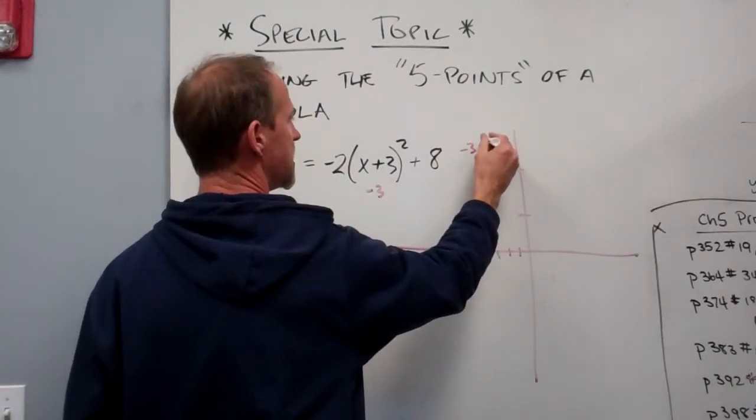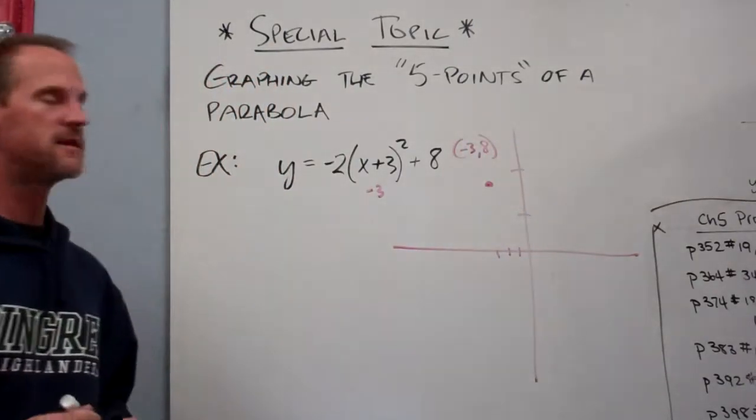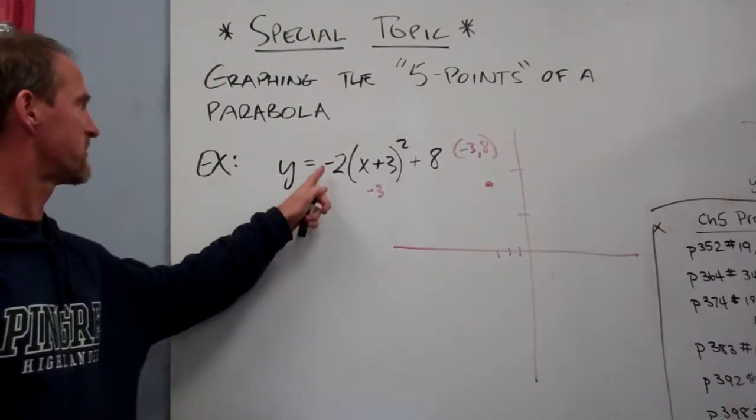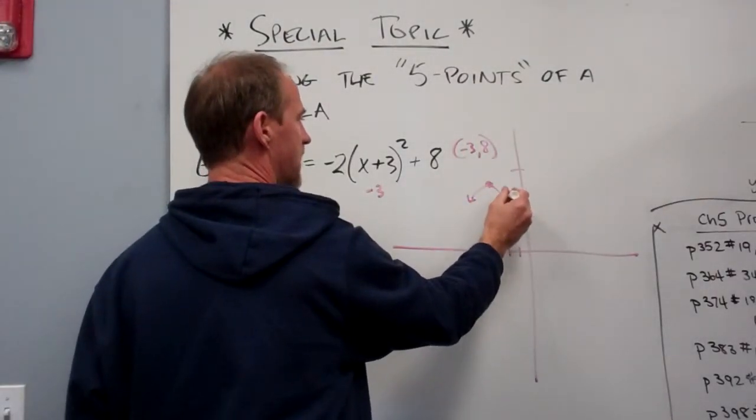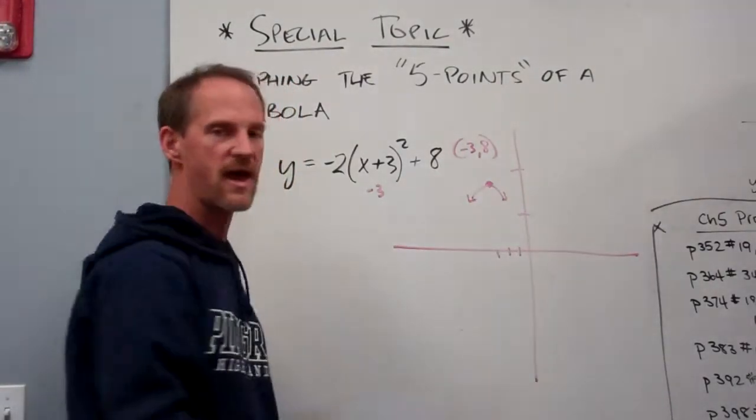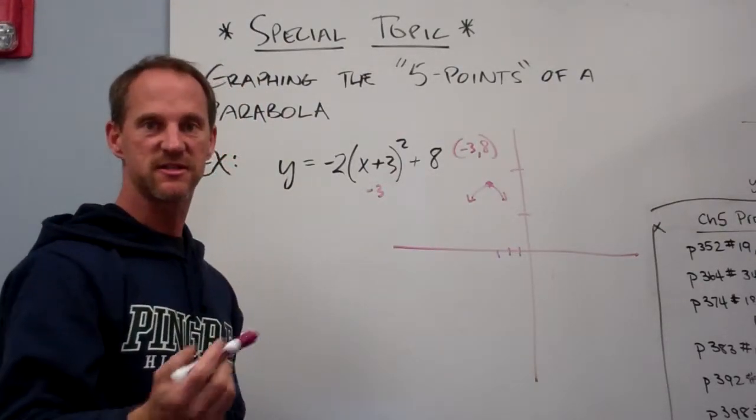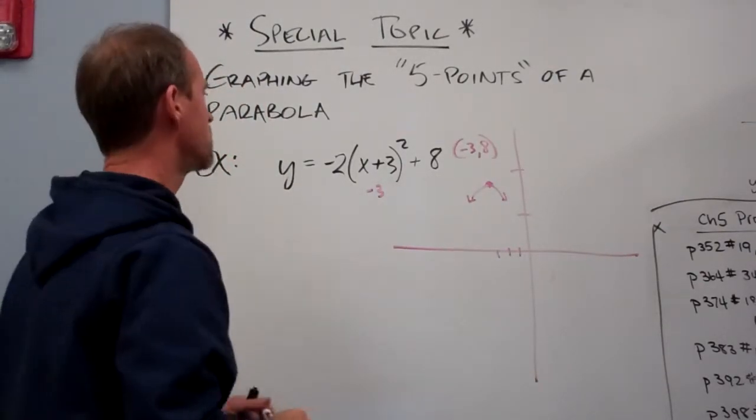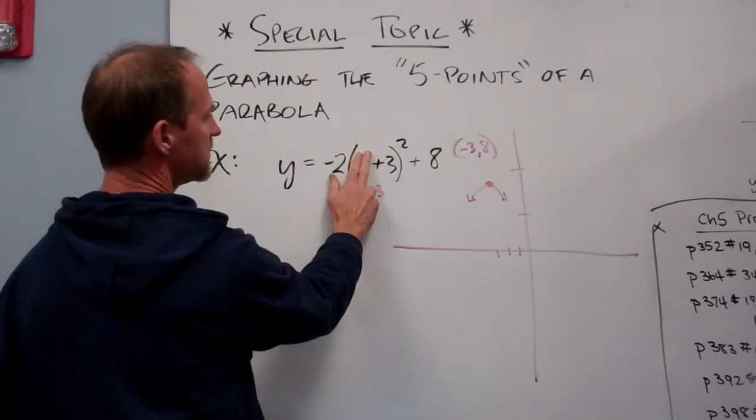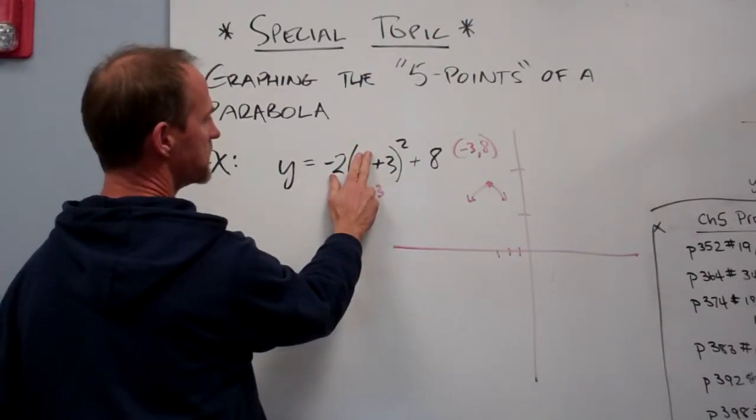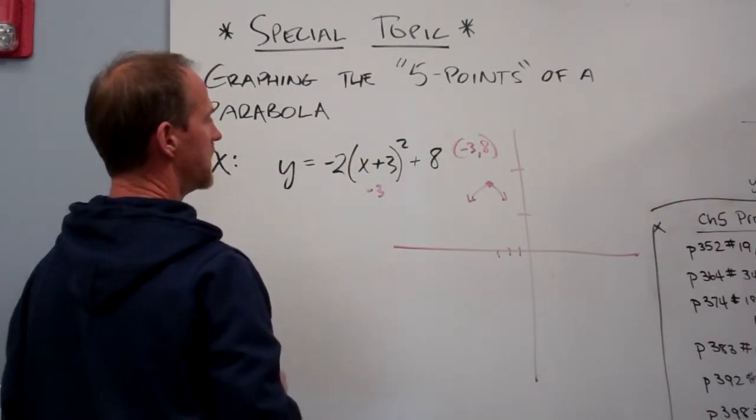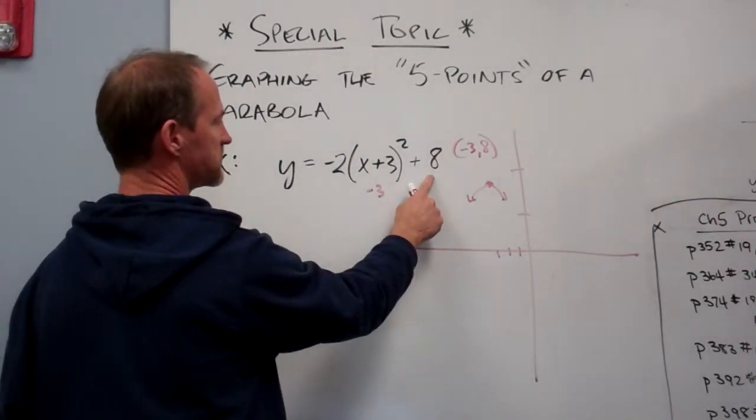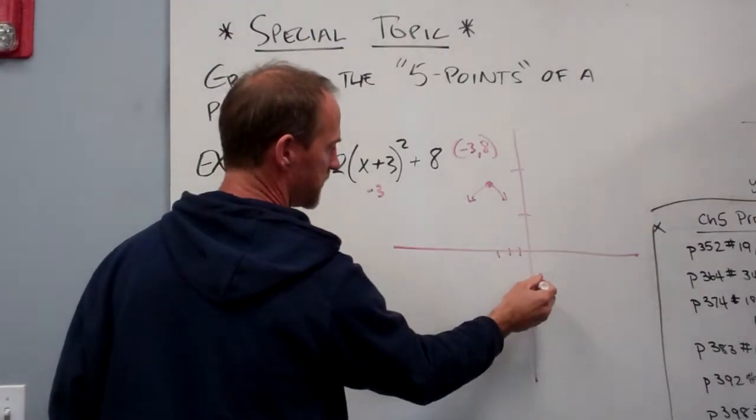So label that negative 3, 8. And it's going to be opening down because we've got a negative. We want to find out where it intercepts the y-axis, so we do that by just substituting in when x is 0. If I plug in 0 right there, you should be able to do it in your head. 3 squared is 9, 9 times 2 is negative 18, negative 18 plus positive 8 is negative 10.